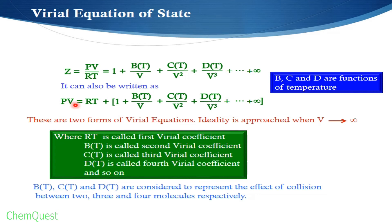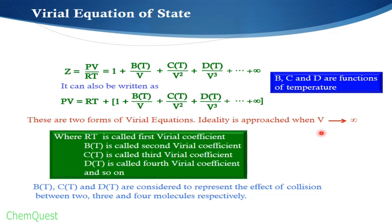These are the two forms of the virial equation. Ideality is approached when volume approaches infinity — when volume becomes very large, gas molecules are very far apart from each other, they stop attracting each other, and ideal behavior is reached.